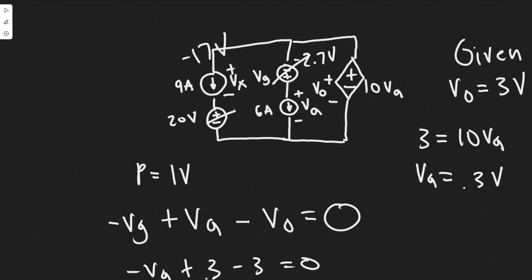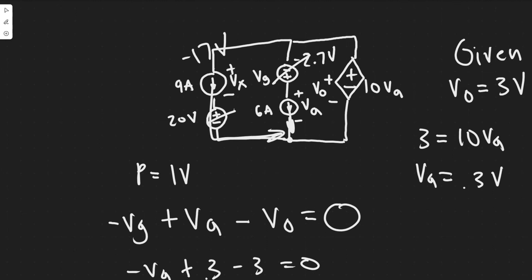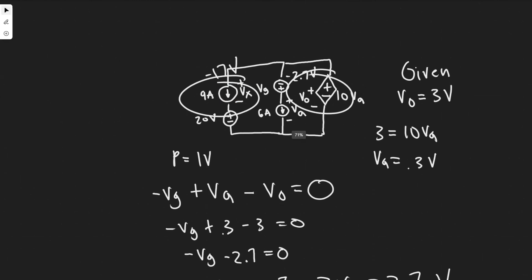Looking at the V sub 0 source: current from the 9A and 6A branches combine via Kirchhoff's current law at the node — 6 plus 9 gives 15 amps traveling through this source entering the negative side. With positive current and positive voltage but entering the negative terminal, P equals negative IV is negative — so this source is developing. The only two sources developing power are this one (Vx branch) and the V sub 0 source.